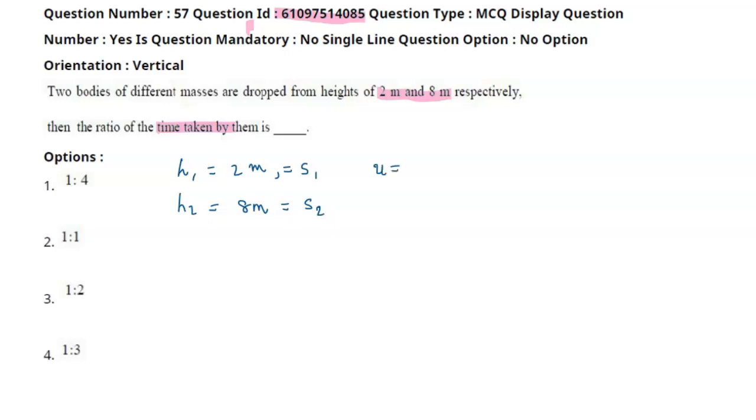When the bodies are dropped, the initial velocity u equals 0. The first body travels for time t1 and the second body travels for time t2.